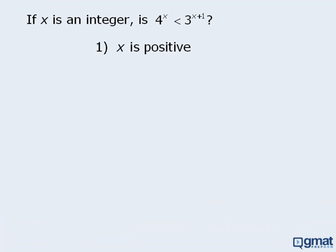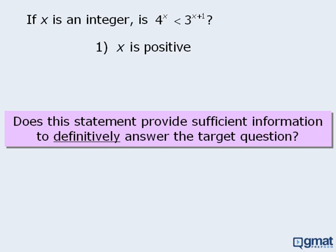In this question, we are told that x is an integer, and we must determine whether 4 to the power of x is less than 3 to the power of x plus 1. Statement 1 tells us that x is positive. Does this statement provide sufficient information to answer the target question? In other words, does knowing that x is positive provide enough information to determine whether or not 4 to the power of x is less than 3 to the power of x plus 1?